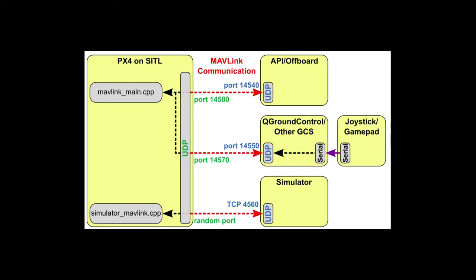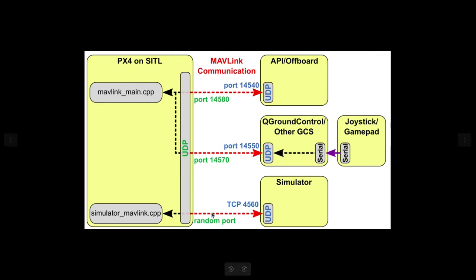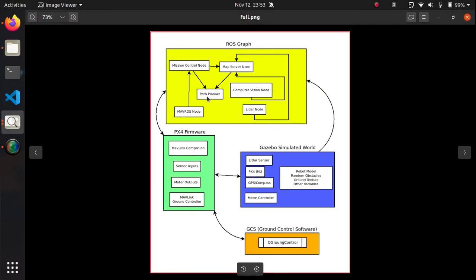The connection layers we are using in our simulation might be different in a real-world scenario. For example, the UDP and TCP connections we use in simulation might be replaced by things like serial communication over UART — that is, Universal Asynchronous Receiver Transmitter. This was just the overview of how things communicate or connect with each other.